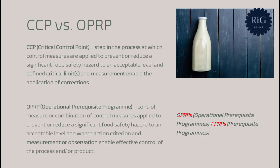The other concept, the OPRP — operational prerequisite program — is by definition a control measure or a combination of control measures applied to prevent or reduce a significant food safety hazard to an acceptable level, and where action criterion and measurement or observation enable effective control of the process and/or product.